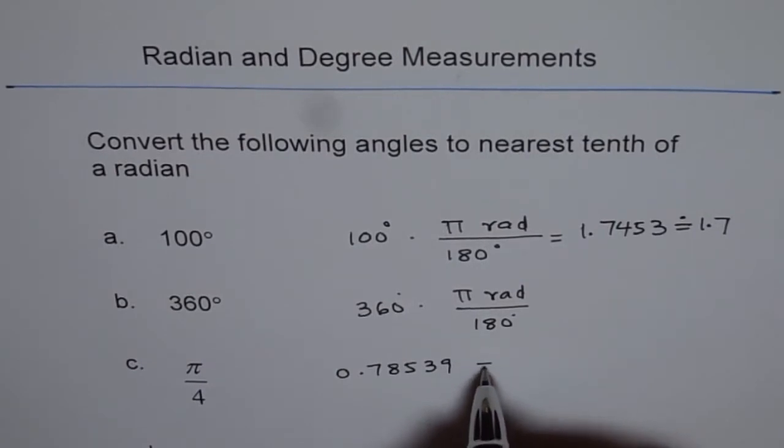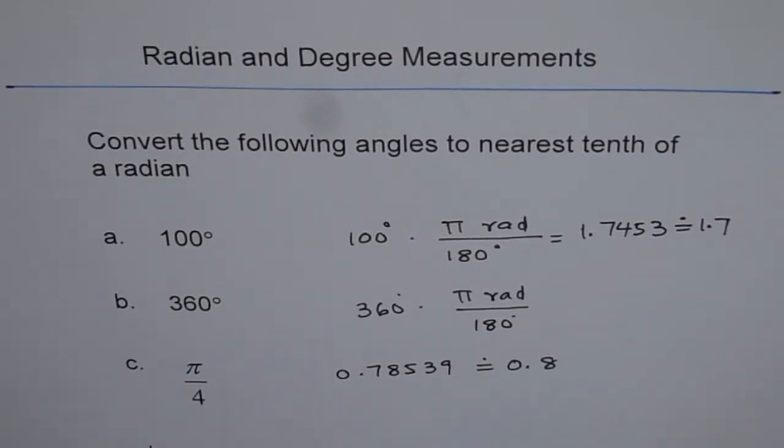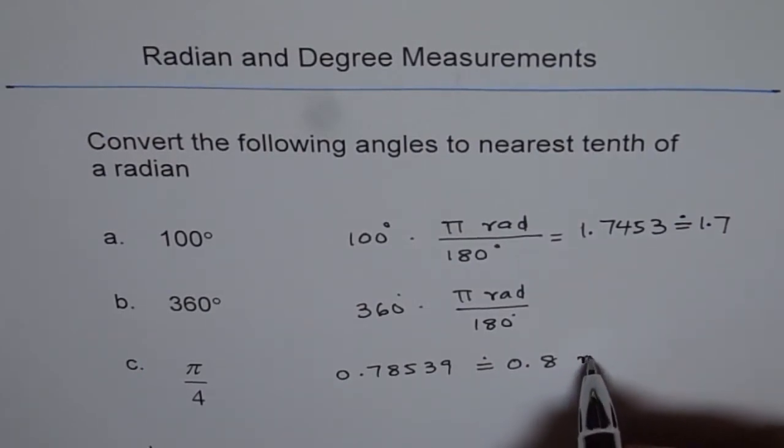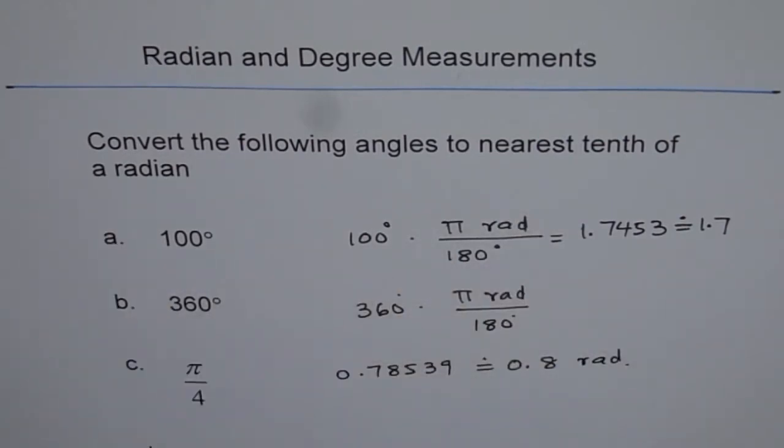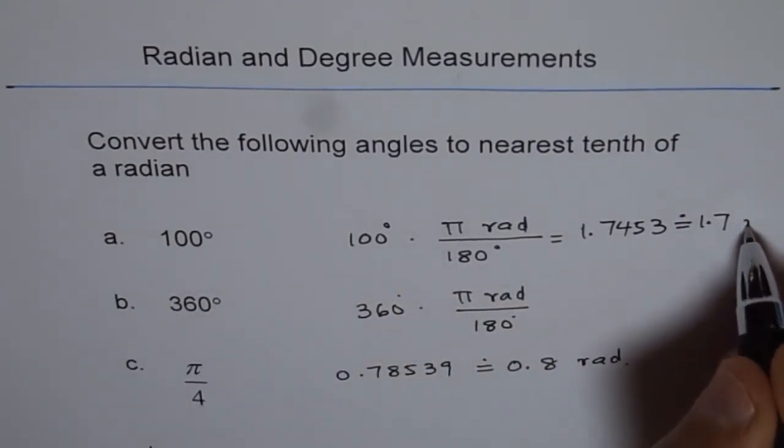Anyway, we just want tenths so we will write 0.8 in radians. Now whenever you are writing in radians, it is not really necessary to write a unit here because radian is a ratio. But it is good to write radian, right, since the question says and just to make it clear.